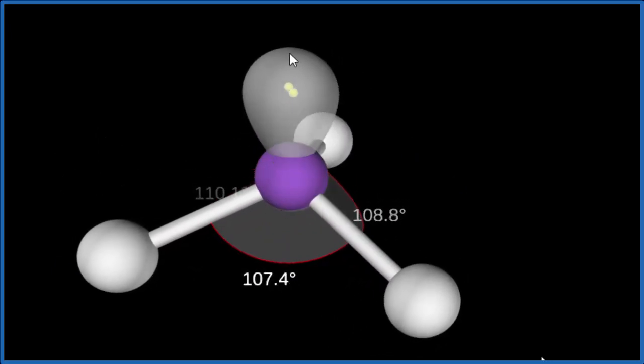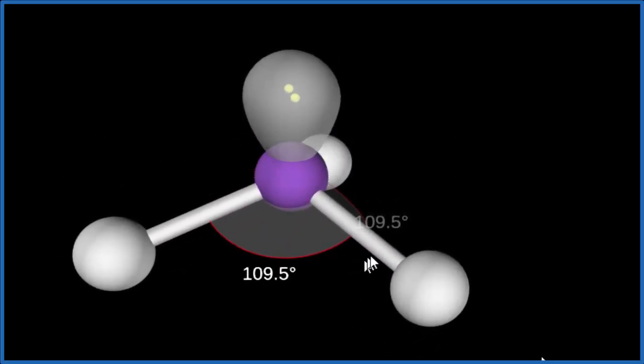It says it's 109.5. This is a generic molecule. So it may be different. I would expect it probably would be a little bit less than 109.5. But this is the molecular geometry for PO3, three minus.